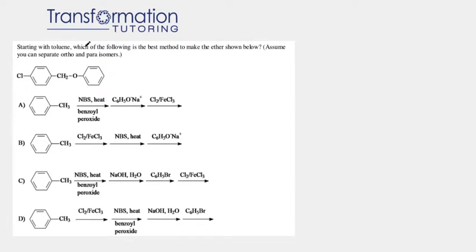Let's start with the first reaction: NBS heat. What NBS heat does is it adds bromine to the allylic or benzylic position, which are positions one carbon away from the double bond.